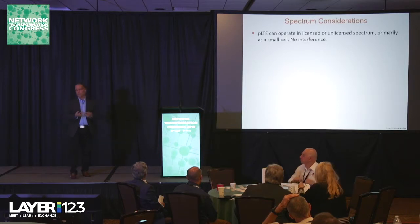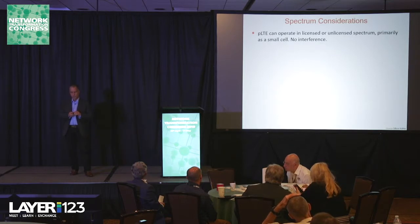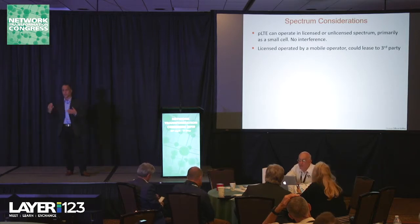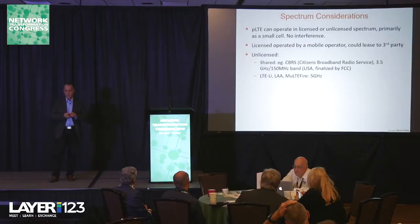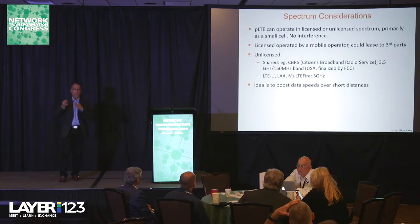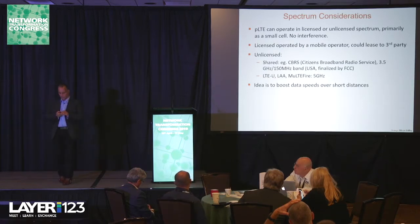People may ask about spectrum for private LTE. There are a few choices: private LTE can operate in licensed or unlicensed spectrum. A service provider like AT&T, Sprint, Verizon, or T-Mobile could allocate a band to a particular customer — you just have to avoid interference with public LTE. There's also CBRS, Citizens Broadband Radio Service, operating at 3.5 GHz, which is released spectrum. And there's LTE unlicensed, including MulteFire at 5 GHz. The idea is to boost data speeds over short distances — probably a couple of miles.